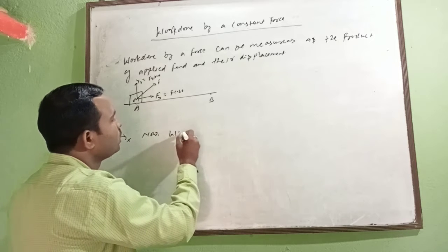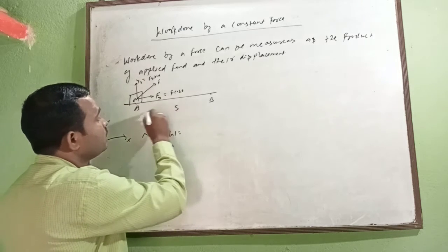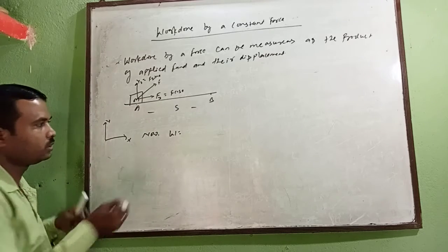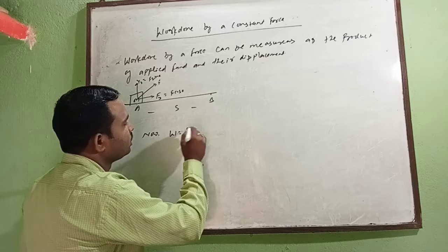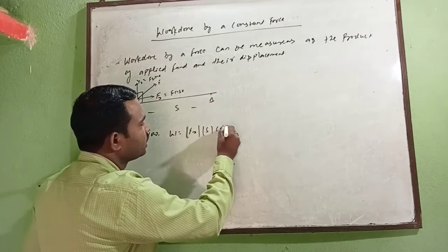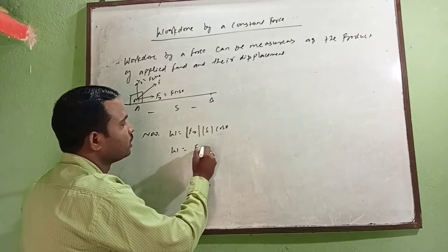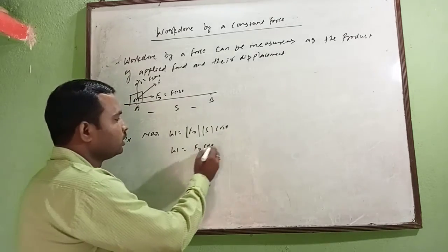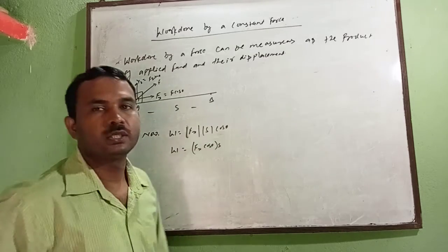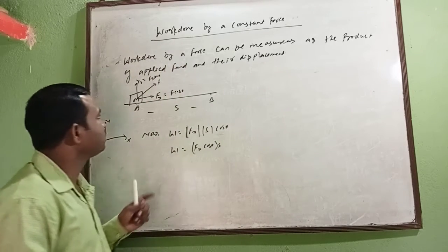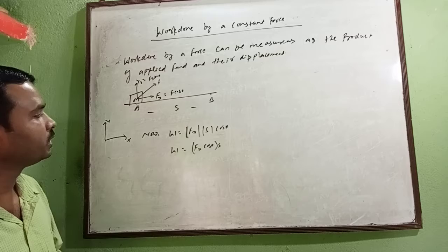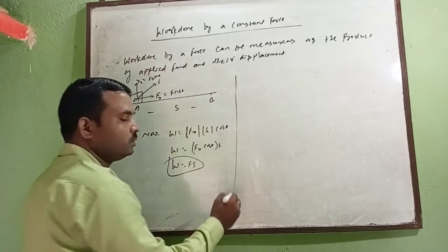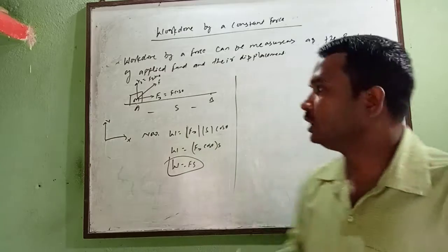The work done is W = F_x × s, where s is the displacement. Along the x-axis, we write W = F_x × s × cosθ, or simply W = fs. If the angle between force and displacement is given, you substitute it; if not, you directly apply W = fs.